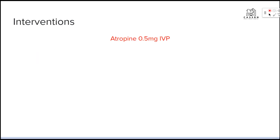Our main intervention is atropine 0.5 milligrams IV push. This is the generic treatment that's going to help speed the heart up. However, it's only a temporary fix — we can't give people atropine IV pushes when they leave the hospital. So we want to make sure we're finding the underlying cause so that we can do better long-term treatment.